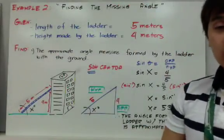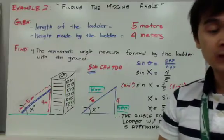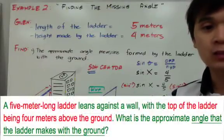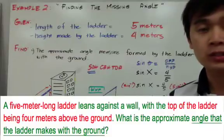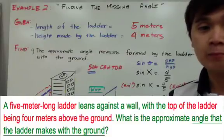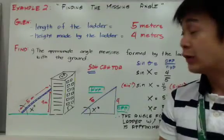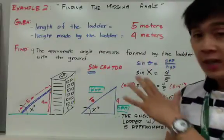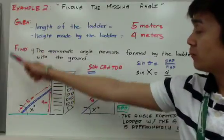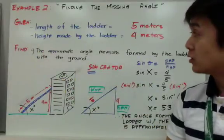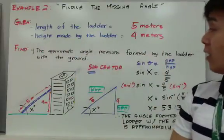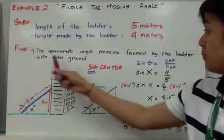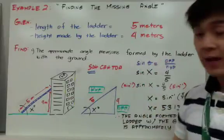The second word problem is: a 5 meter long ladder leans against a wall, with the top of the ladder being 4 meters above the ground. What is the approximate angle that the ladder makes with the ground? This time we are looking for the measure of the angle. Given that the length of the ladder is 5 meters and the height is 4 meters, what is the approximate angle formed by the ladder with the ground?